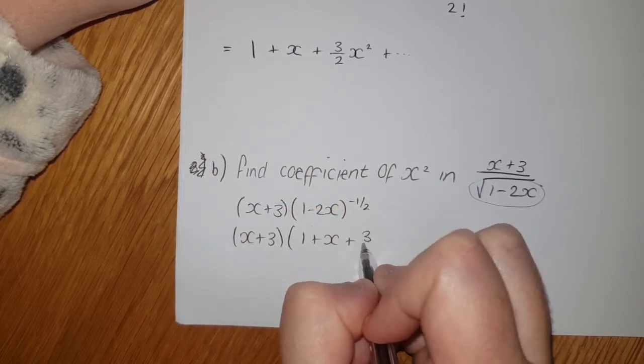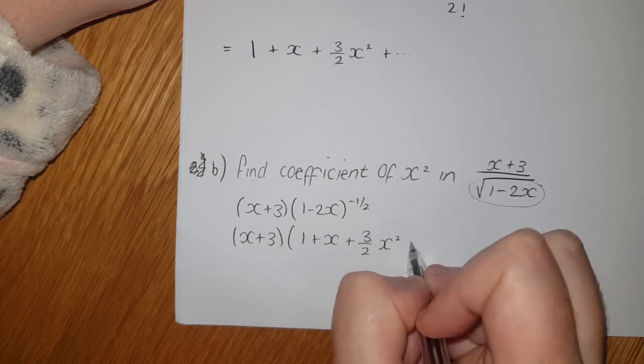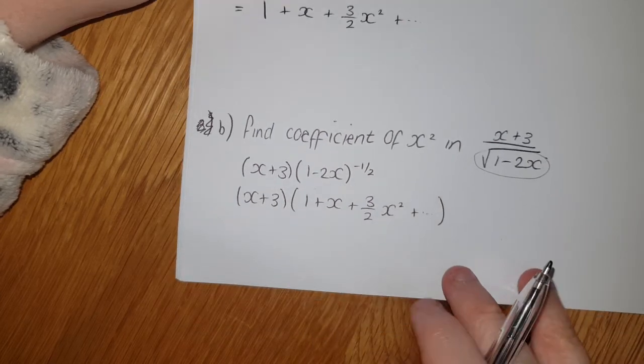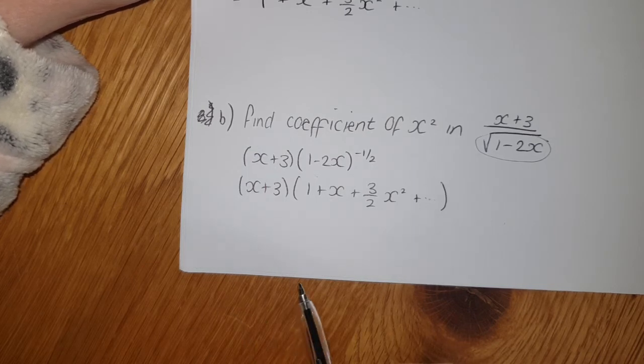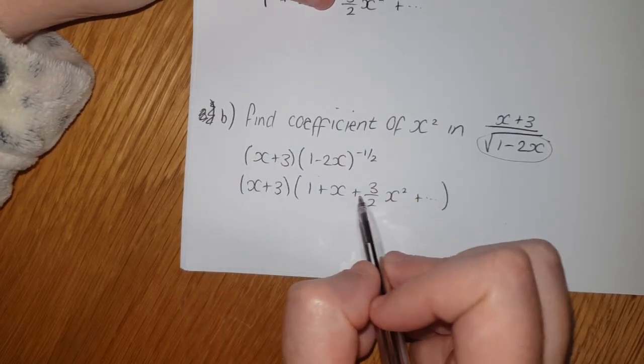Now if I want the coefficient of x², that just means what number will end up in front of x². Now if you look at this, the only terms that are going to give you an x² is if I multiply the x term by the x.